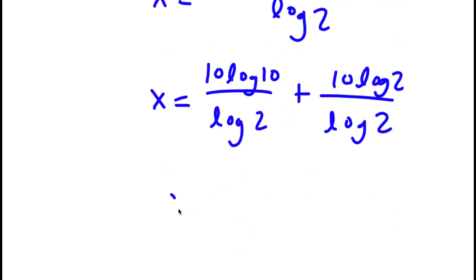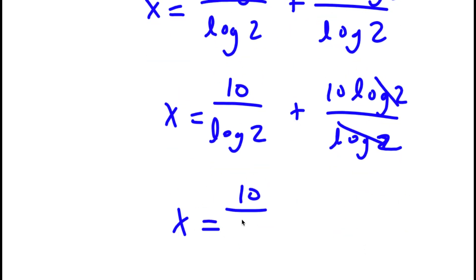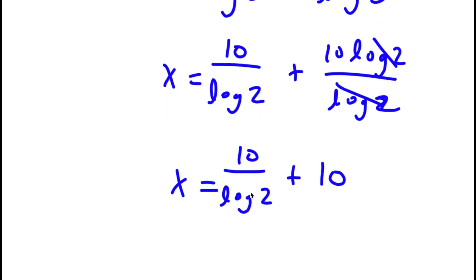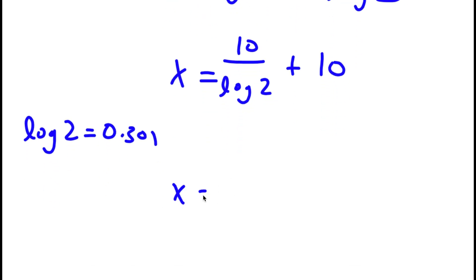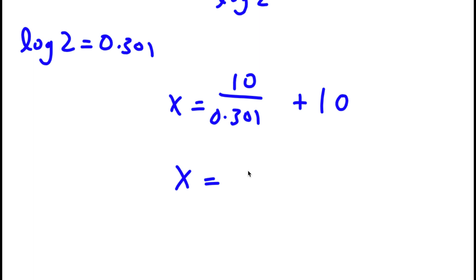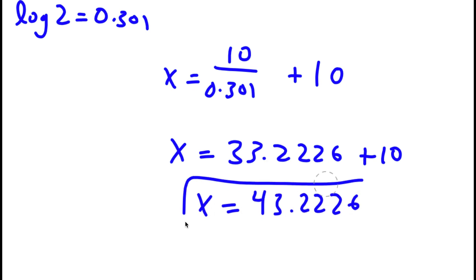Now log 10 is actually equal to 1. So I have x is equal to 10 times 1 over log 2 plus 10 times log 2 over log 2. The two log 2s in the second term cancel out, so I'm left with x is equal to 10 over log 2 plus 10. Since log 2 equals 0.301, I have x equal to 10 over 0.301 plus 10, which is 33.2226 plus 10, giving x approximately equal to 43.2226.